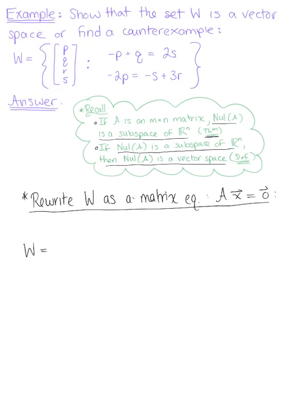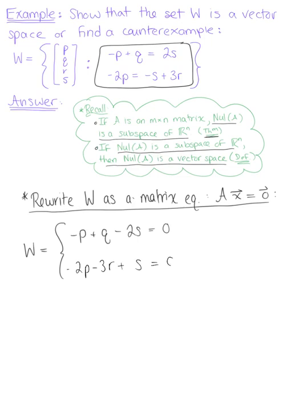So we have set W defined. With this linear system that we're given, let's bring all of our variables to one side. So I have -P + Q - 2S = 0, and we also have -2P - 3R + S = 0.